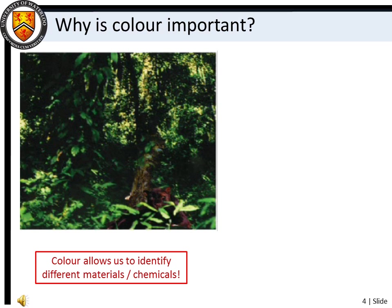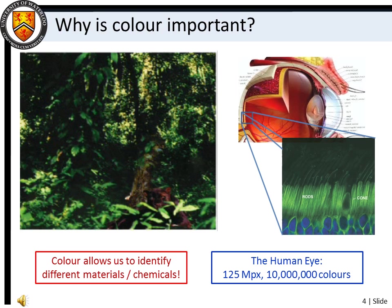Sometimes two different materials will look like they have the same color to us, but that is just because the human eye does not have a fine enough color scale to differentiate between them. Having said this, the human eye is actually a superb spectroscopic detector, and it has served our species well for a very long time. Generally speaking, though, the days of doing spectroscopy by eye are long gone.